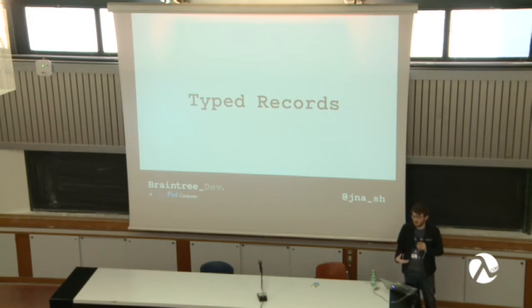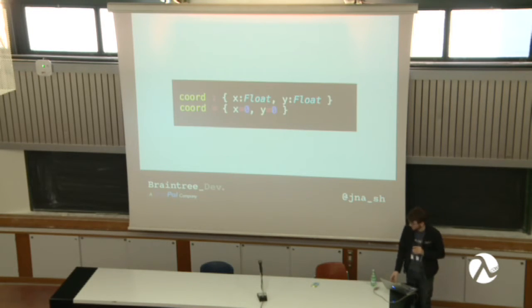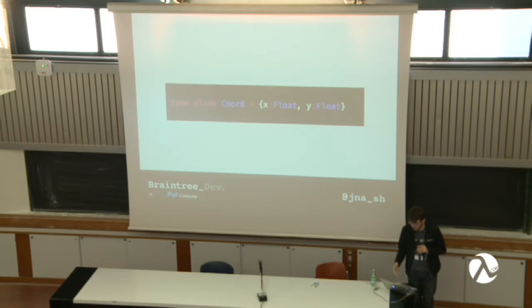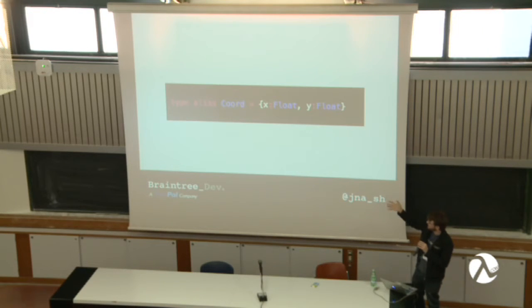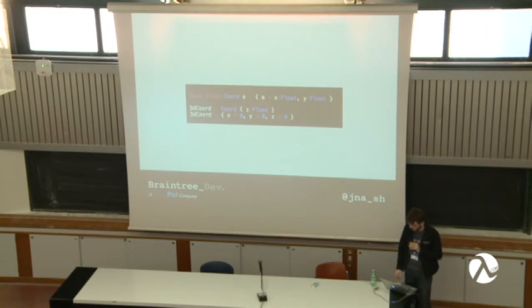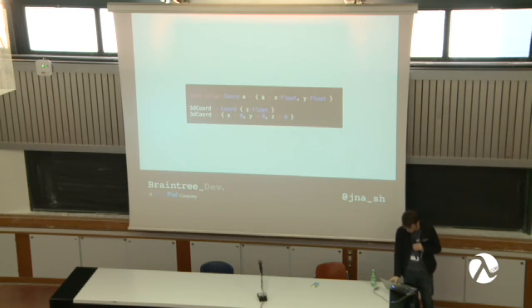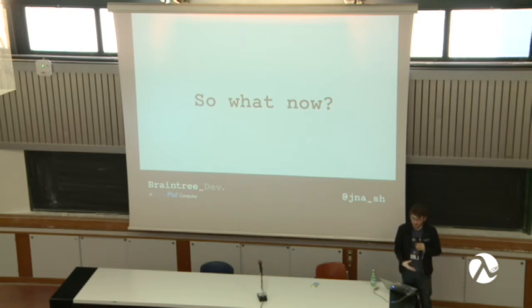We can also do typed records as a type alias. So we can define a Coordinate type alias that has two fields of type Float. These can be extensible — if we give the type alias a parameter, that parameter can be a new field. When we work on functions with it, we can pass in a new field and just add it to our record. So those are the basic building blocks of Elm and the essential components of what it can do.